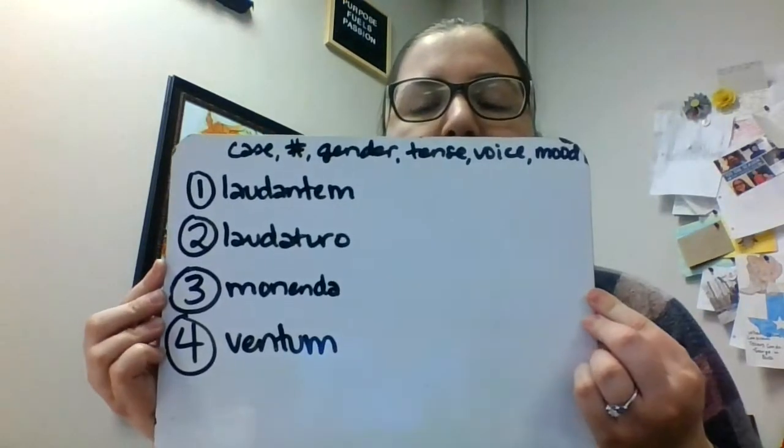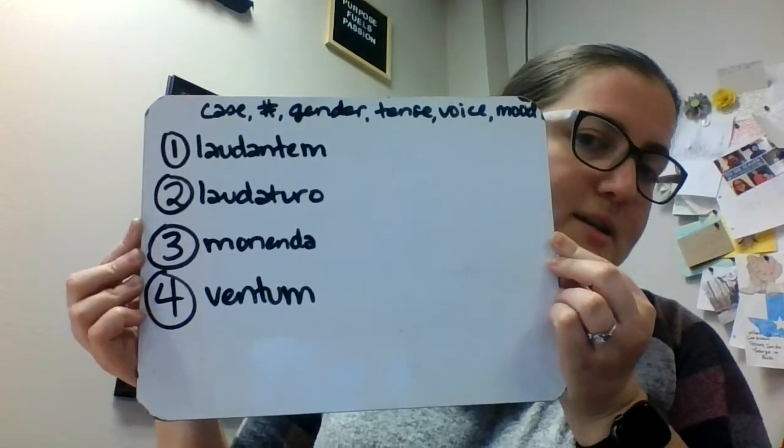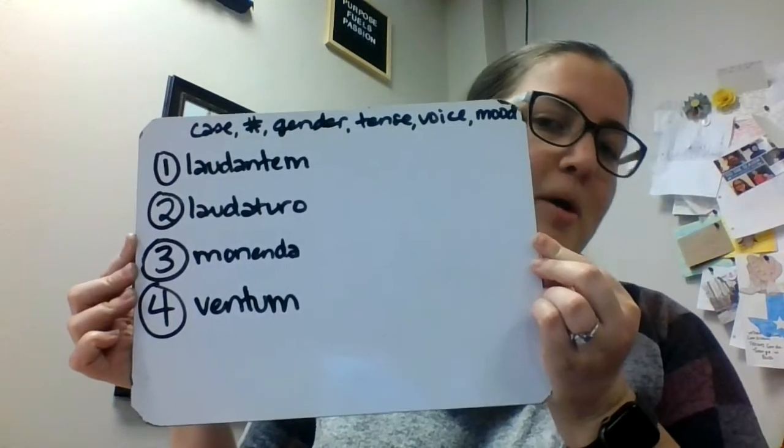Those are our charts that we did today. Next, we're going to do some parsing practice. The things we need to parse for our participles are case, number, gender, tense, voice, and mood — so six things for our participles. Remember, these are like adjectives and verbs smashed together: case, number, gender for that adjective ending, and then tense, voice, and mood for our type of participle. I have four of them here for you to try. Pause the video if you haven't parsed these already and go ahead and try.